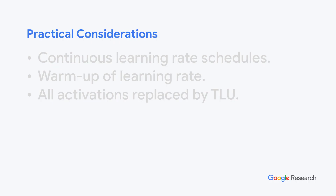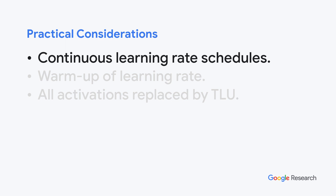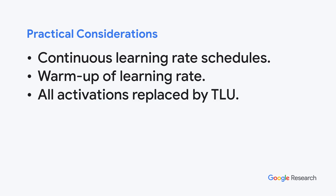There are a few key practical considerations that we found to be useful to effectively train models using the FRN layer. Final performance benefited from continuous learning rate schedules such as cosine decay. Slowly ramping up the learning rate at the beginning of training was essential for many non-ResNet models. And lastly, we found it useful to replace all activations in the model by TLU, as opposed to just the ones following normalization.